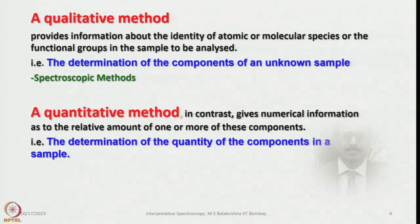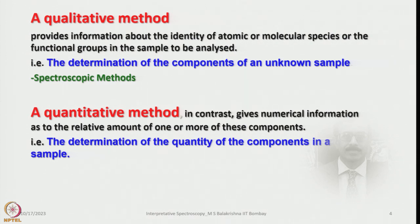What is the quantitative method? In contrast to the qualitative method, it gives numerical information as to the relative amounts of one or more of these components. Unless we know what the substance is, it is not advisable to go for a quantitative method. From that point of view, the qualitative method is very important, and once we know what the substance is, we should go for an appropriate quantitative method — that is, the determination of the quantity of a component in a sample.